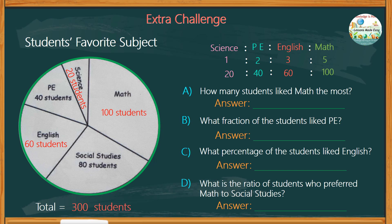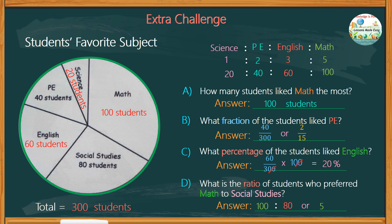Now we are ready to answer the guide questions. How many students liked math the most? Clearly, 100 students like math the most. What fraction of the students like PE? 40 out of 300 students like PE, which can be reduced to 2 over 15. What percentage of the students liked English? 60 out of 300 students like English. To get the percentage, we multiply this fraction by 100 and cross the zeros out, leaving 60 divided by 3, which equals 20, or 20%. The ratio of students who preferred math to social studies would be 100 to 80, or 5 to 4.